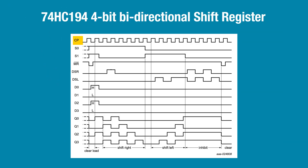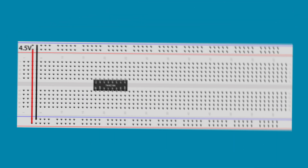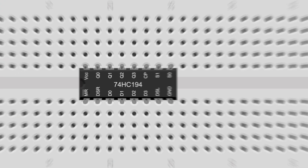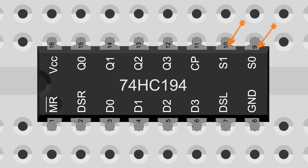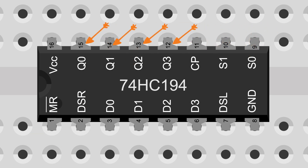This chip requires a clock signal. We can make one with a 555 timer, but let's first look at the chip. Here is the 16-pin shift register. Pins 2 and 7 are the serial inputs. Pins 3 through 6 are the parallel inputs. Pins 9 and 10 are the mode select pins. Pins 12 through 15 are the parallel outputs.